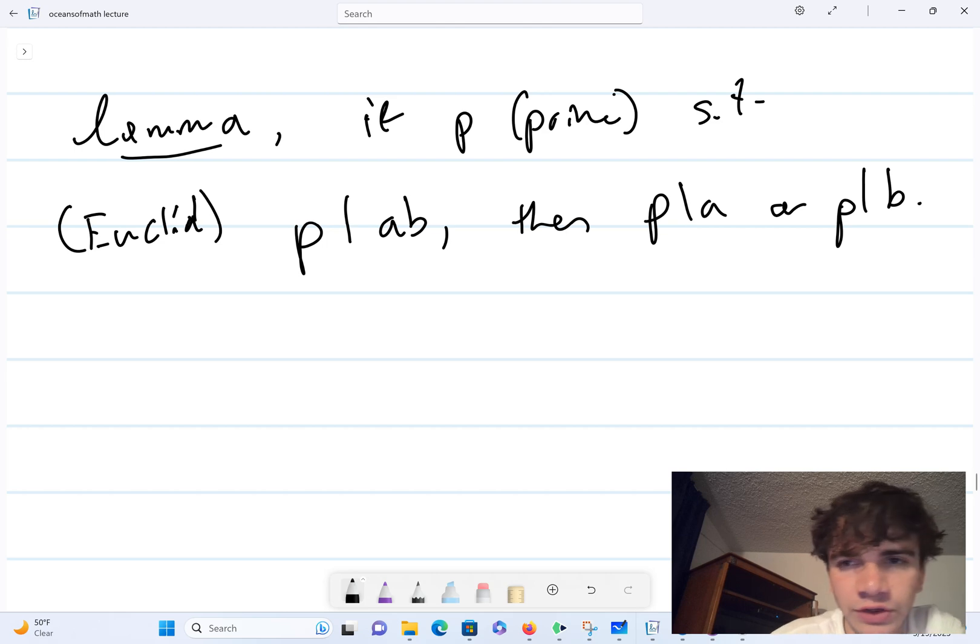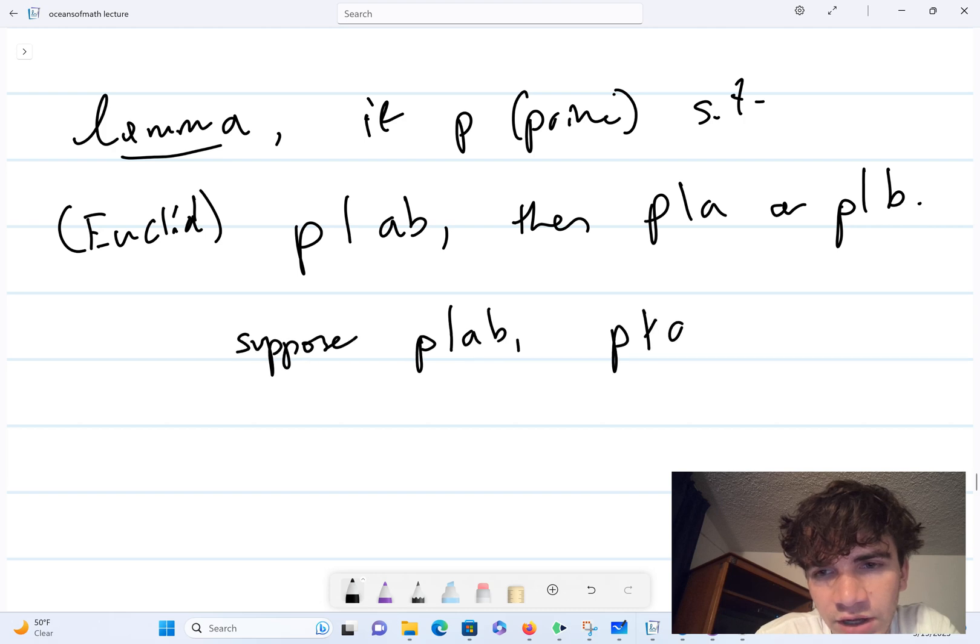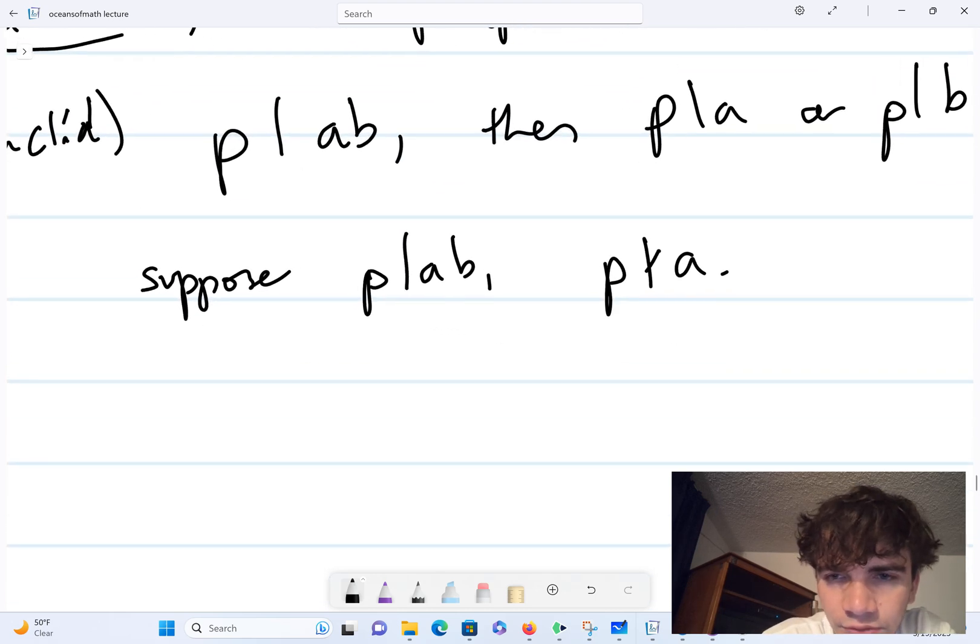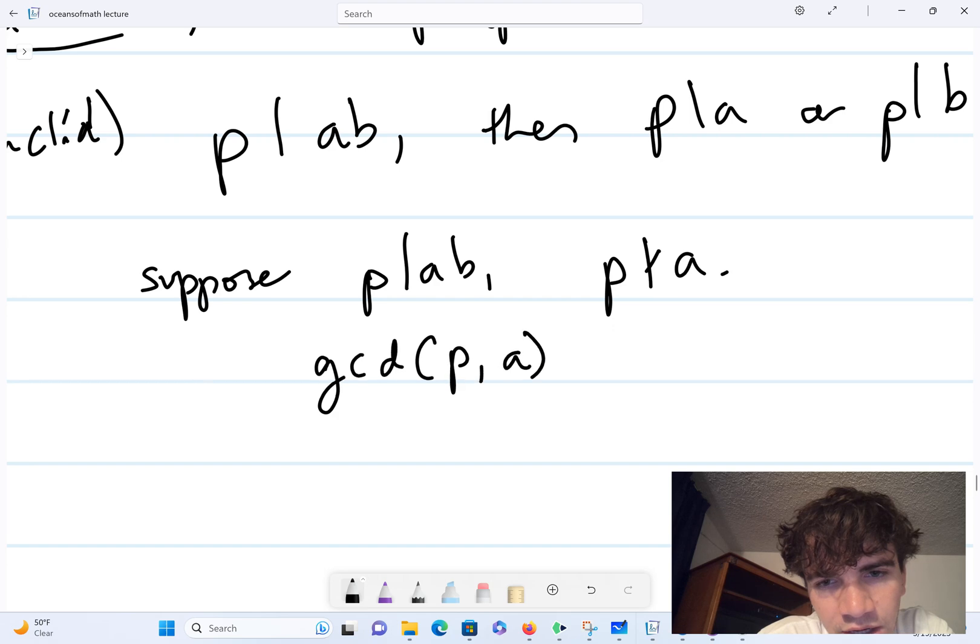So let's prove this. Suppose p divides ab and p does not divide a. Then the gcd of p and a has to be one.